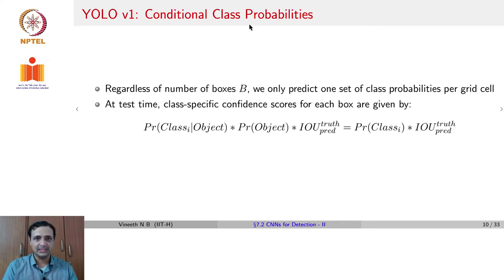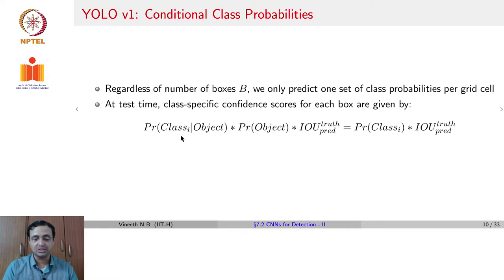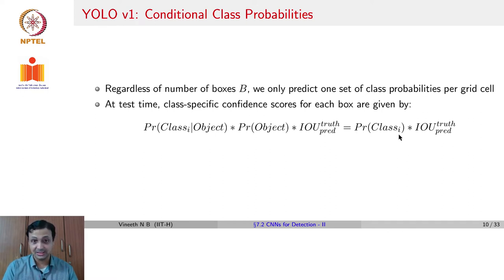There are conditional class probabilities for each class in each grid cell. Regardless of the number of boxes B predicted by each grid cell, YOLO predicts only C class probabilities for one grid cell. You could assume those C class probabilities are given by the probability of class i given an object. If you multiply these class conditionals with your confidence scores — which is the probability of an object times the IOU between ground truth and predicted values — you get the probability of class i times the IOU of the ground truth and predicted box. So for each cell, you are computing: what is the probability this class occurs here, and how accurate is the predicted box?